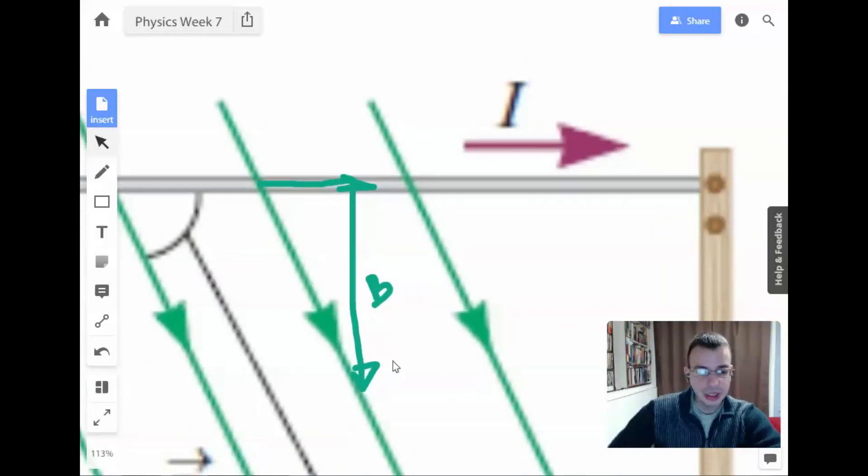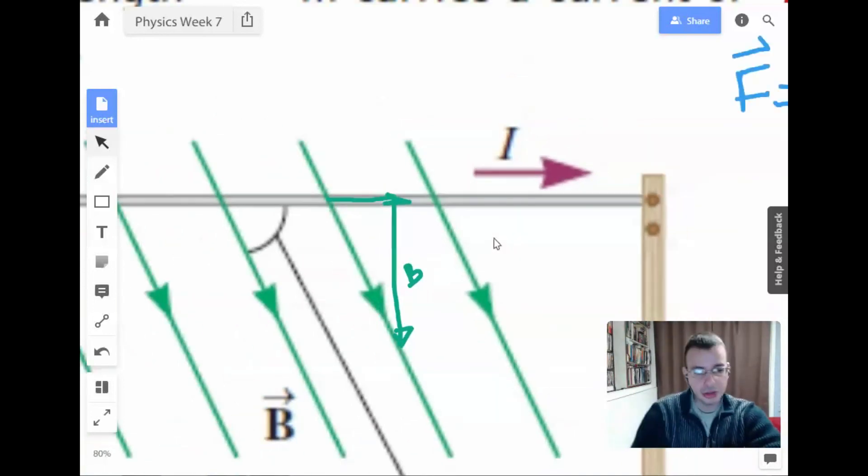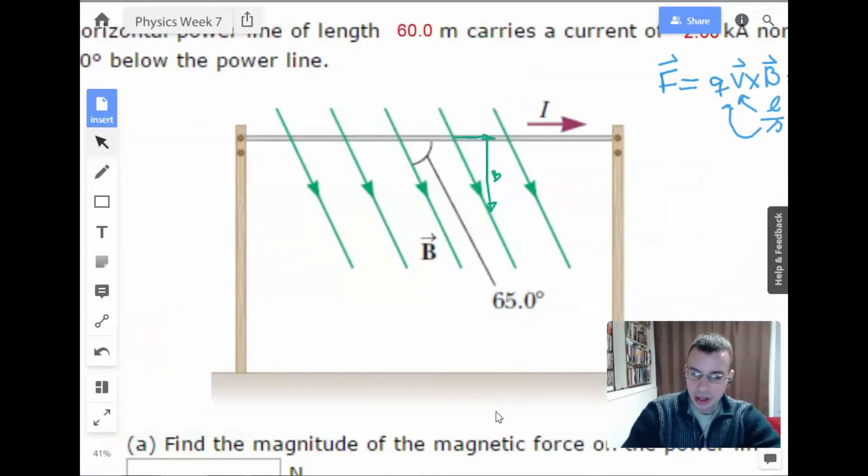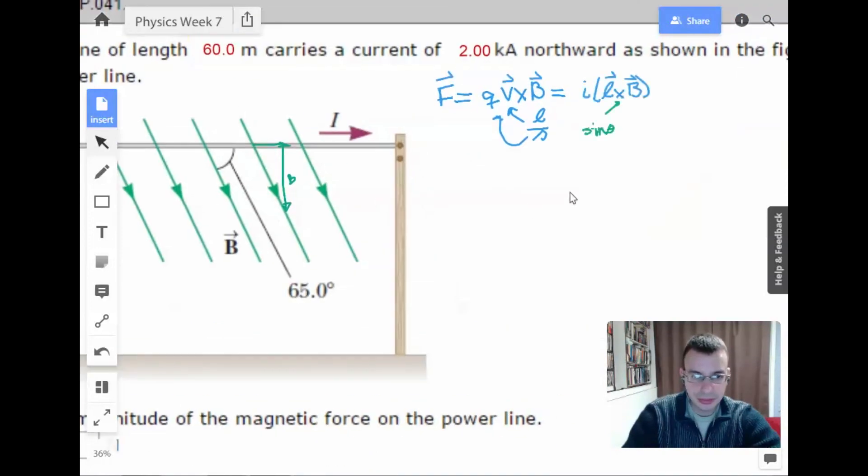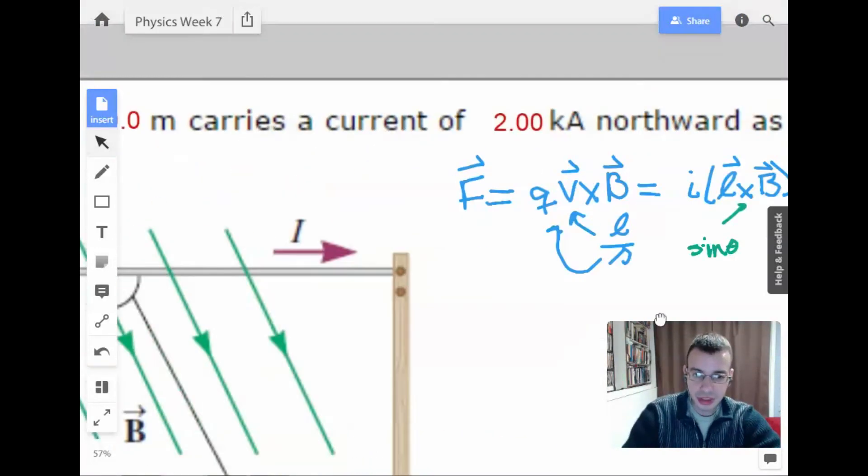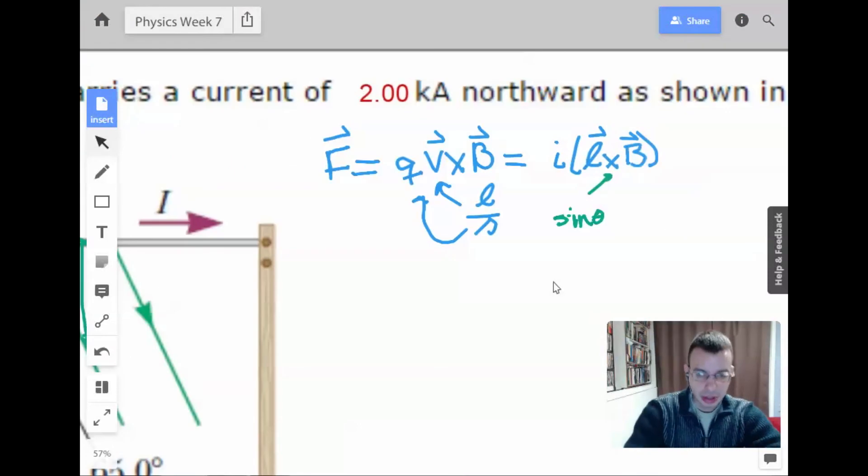The two perpendicular vectors—the part of the magnetic field that is parallel to the current will contribute nothing. But the part that is perpendicular will contribute everything. So we're just going to multiply this guy out.